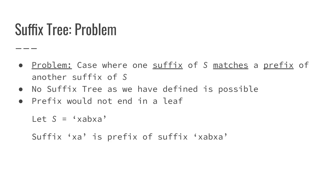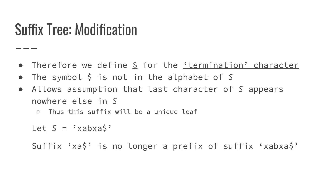One issue with what we've represented so far is that we could have cases where a prefix in the string could possibly also be a suffix that occurs in the string. We remedy this by including in our alphabet a unique character called the termination character. From the example XABXA, this would have been an issue, but since we've included this termination character, XA at the end would no longer be found as a prefix in our suffix tree.